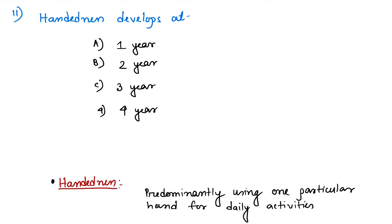Welcome to the second episode of NEET November recall. Starting with question number 11: handedness develops at. This is about pediatric developmental milestones, a very important topic for NEET. Handedness means predominantly using one particular hand for daily activities.